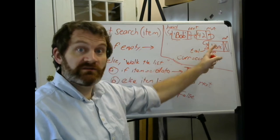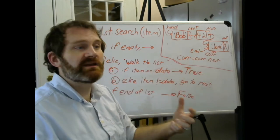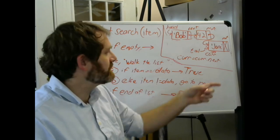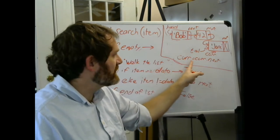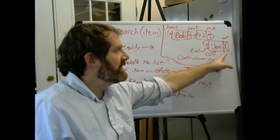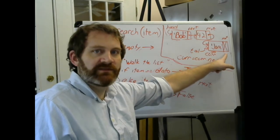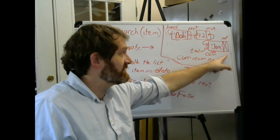So what will happen? According to our code, we will do cur gets cur dot next. What is the next of the tail? This is the tail node. This next is in fact none. Nothing comes after the tail. By definition, nothing in a linked list comes after a tail. So the tail's next value is none.